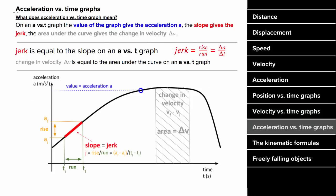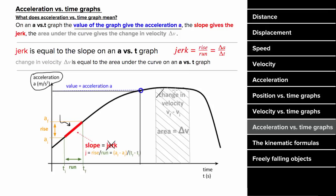How do you interpret an acceleration versus time graph? The value of the vertical axis gives you the acceleration at that moment in time. The slope equals the jerk, which isn't asked about much. But importantly, the area under the graph between two times equals the change in velocity experienced by the object between those two times.